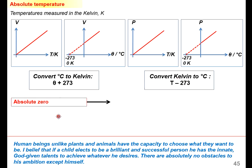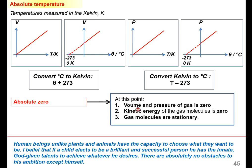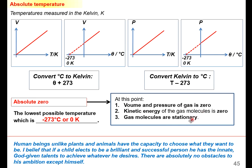Absolute zero means that the volume and pressure of gas is zero, the kinetic energy of the gas molecule is zero, and gas molecules are stationary at this particular point. So absolute zero is the lowest possible temperature, which is negative 273 degrees Celsius, or zero Kelvin.